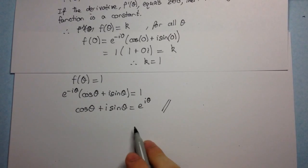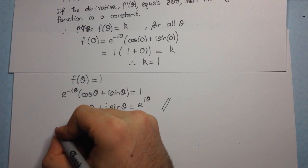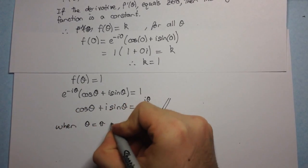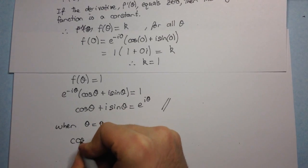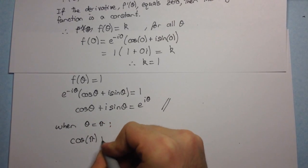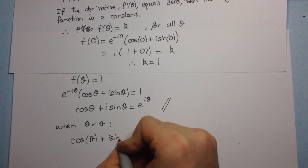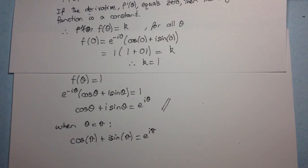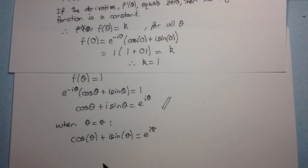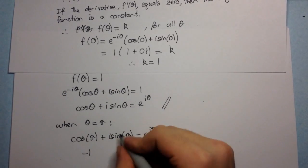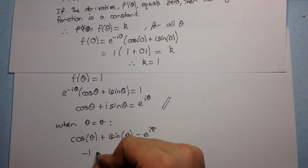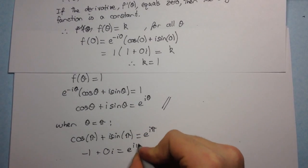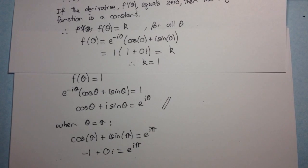Now, I just wanted to mention this special case. So, when theta is equal to pi, what do we get? We get cos of pi plus i sine pi is equal to e to the i pi. Okay, what's cos of pi? Cos of pi is minus one. I sine pi, that's going to be a zero, so plus zero i equals e to the i pi. And so you get this amazing result.